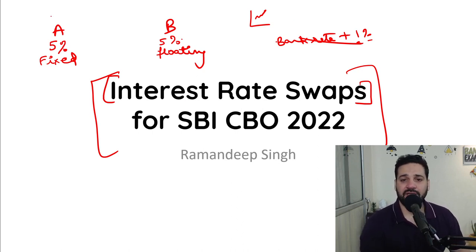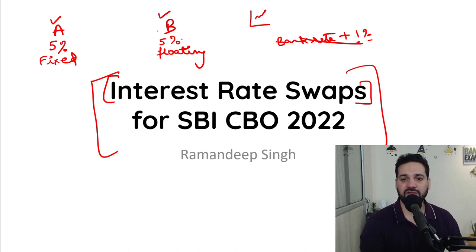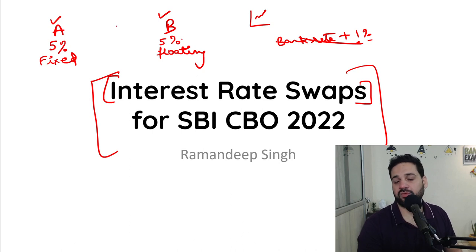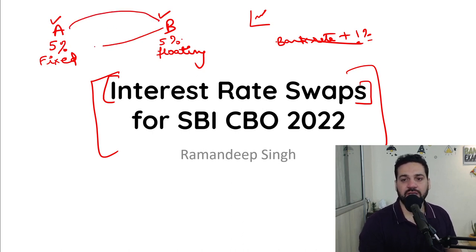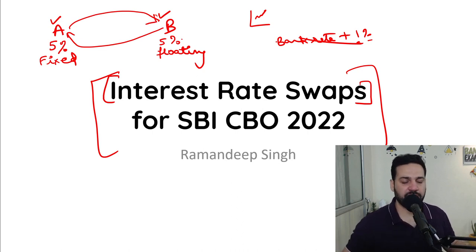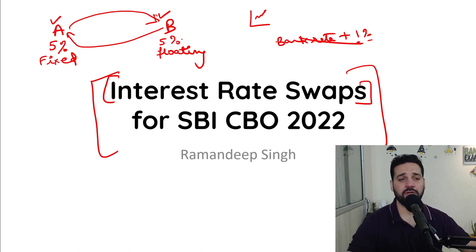So Company A is looking for a floating rate of interest and Company B is looking for the fixed rate of interest. So they come into an agreement that at the end of every year or every month, according to the terms, they are going to exchange the payments.